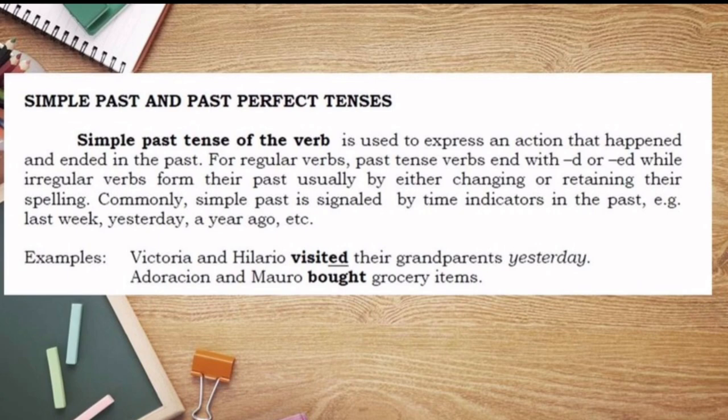For irregular verbs, we have 'bought,' whose base form is 'buy' — from B-U-Y, it becomes 'bought,' so we change the spelling. There are also irregular verbs that don't change spelling; for example, the verb 'put' has no past tense 'puted,' and the verb 'hit' has no past tense 'hited.' Those are examples of irregular verbs where we retain the spelling from the base form to the past tense form.